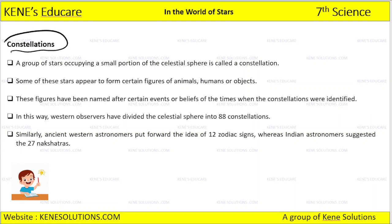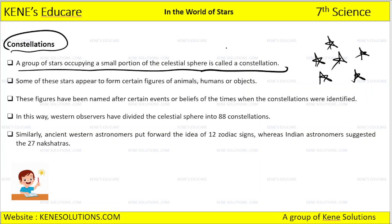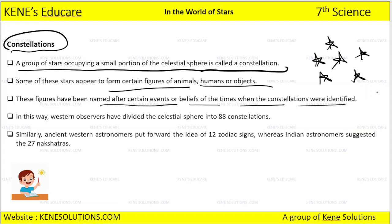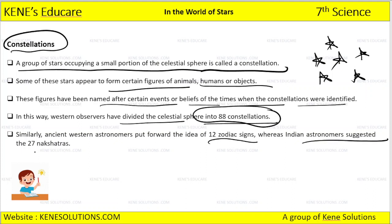What are the constellations? Some stars appear to form certain figures of animals, humans, or objects. These figures have been named after certain events or beliefs of the times when the constellations were identified. Western observers have divided the celestial sphere into 88 constellations. There are 12 zodiac signs, whereas Indian astronomers suggested 27 nakshatra. So there are a total of 88 constellations.